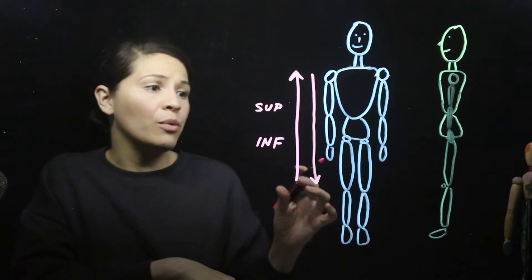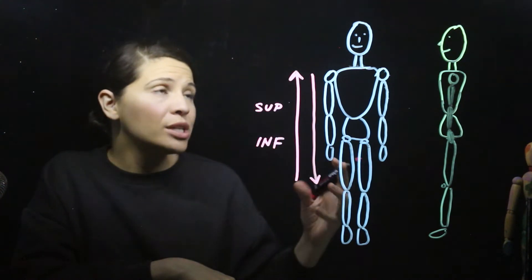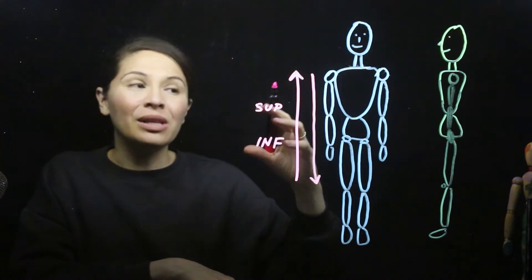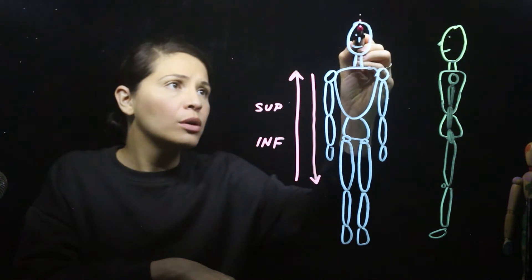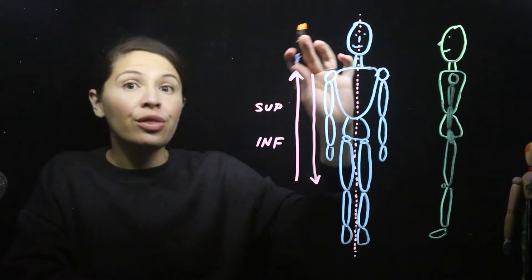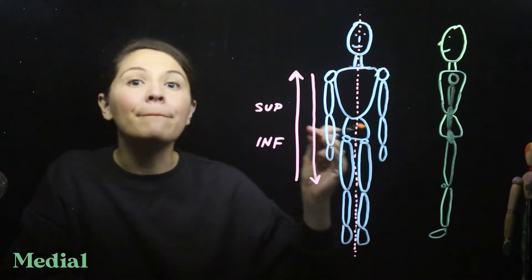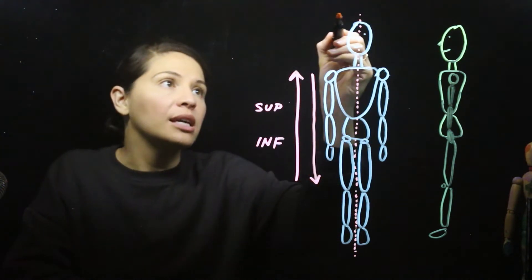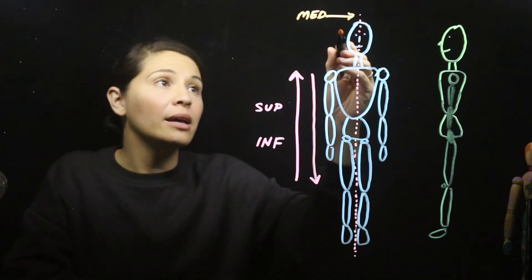Another term used very commonly in anatomical descriptions is medial and lateral. I'm going to draw a line down the middle — this is going to be the midline. Things that are closer to the midline would be termed medial, and things further away would be termed lateral.